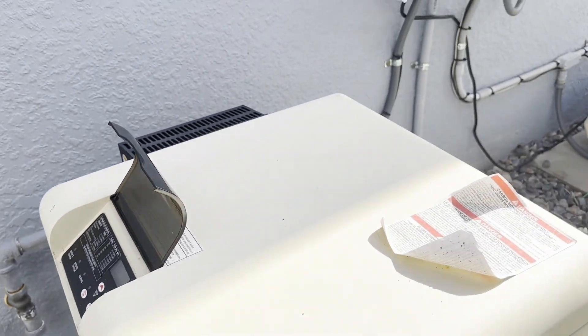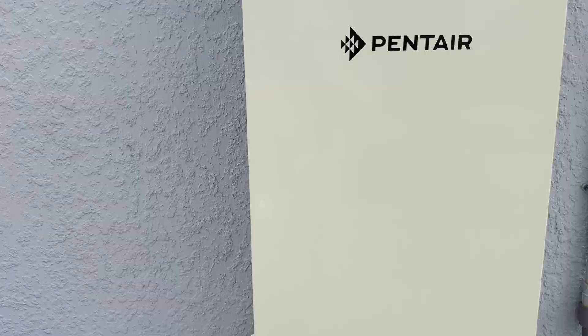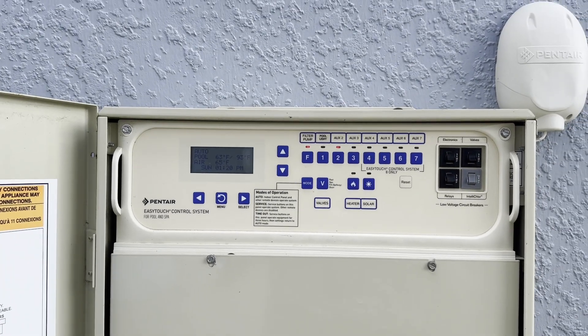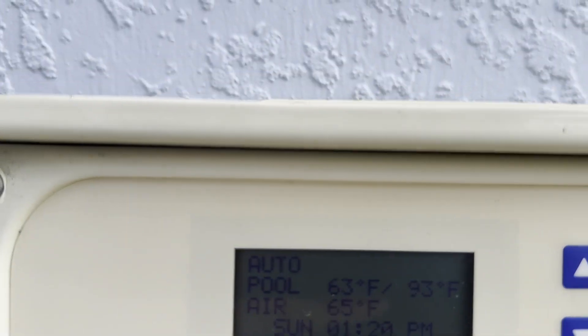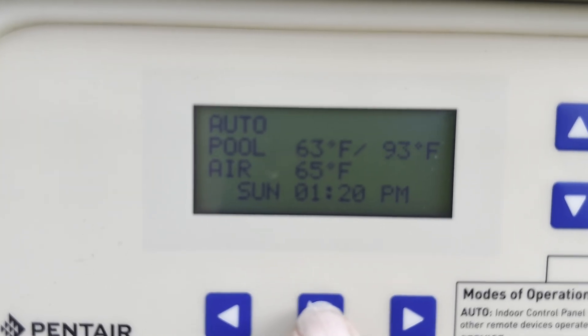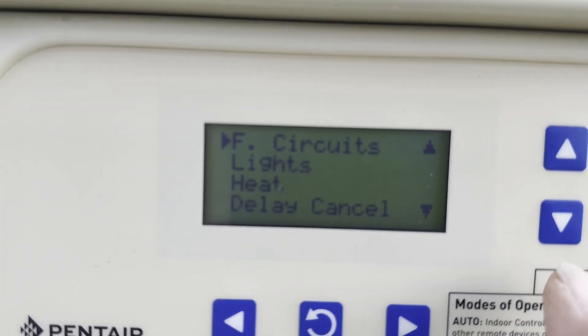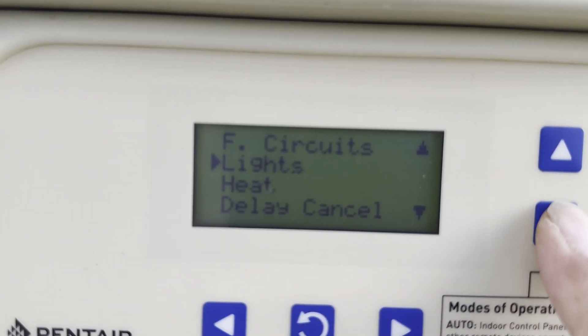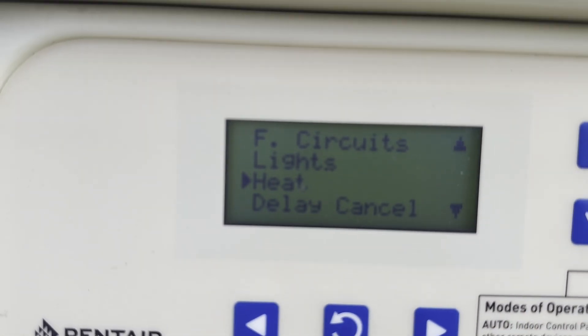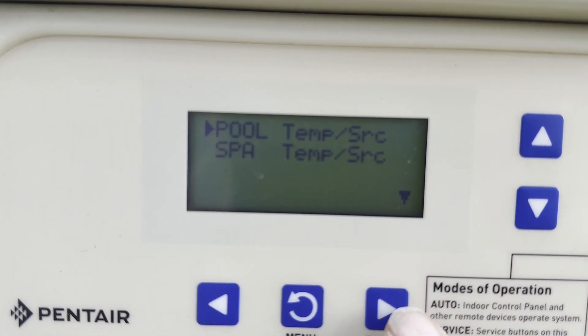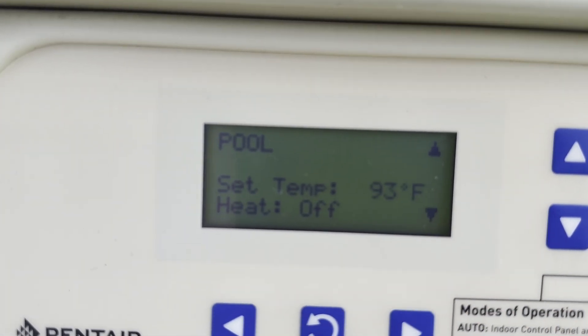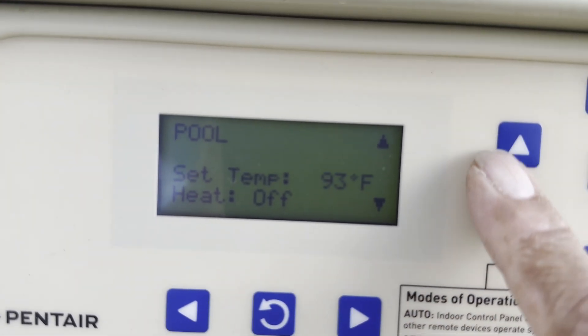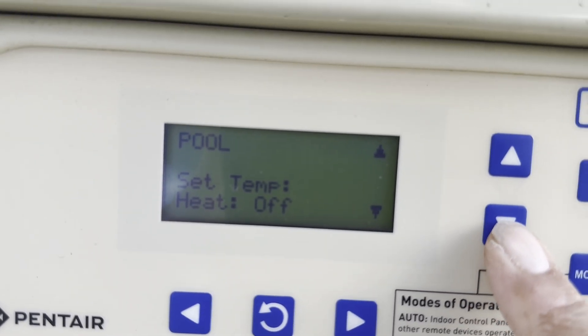Right now the pool heater is off because it's off from the control of the main control panel. So this is the pool main control panel and if we go to the menu we will see that the heater is turned off by the system. There it is, heater. Hit select. Spa pool. And there you see the heater is off.